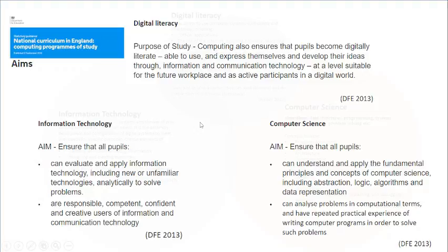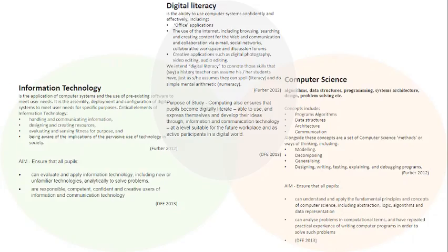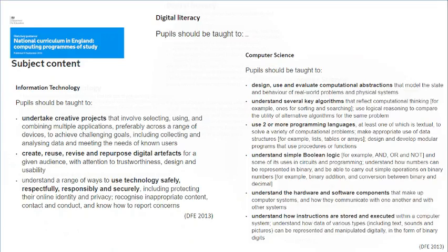So I've added that to our bubbles, which are getting quite full of information. Looking at the actual content the national curriculum wants us to learn at key stage three, it's quite heavy on the computer science side — a lot of computational thinking, algorithms, programming, Boolean logic, hardware and software components. There are only about three points towards information technology, about being creative with projects and creating artefacts. And again, there's the aspect of using technology safely — that digital citizenship idea.